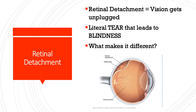People with cataracts often have trouble with color vision — differentiating colors from one another. Then there's retinal detachment. Think of retinal detachment as the vision getting unplugged. As you can see in this picture, there is literally a tear in the posterior portion of your eye, and that tear separates the retina from the blood supply to the eye.